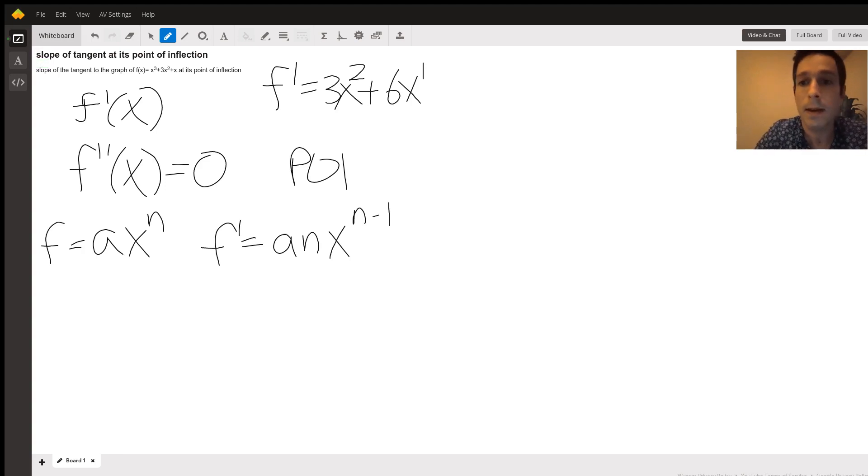And then plus one, right? Then the second derivative, we do the same thing. Three times two is six, two minus one is one, and then the derivative of six x to the first power is just six.